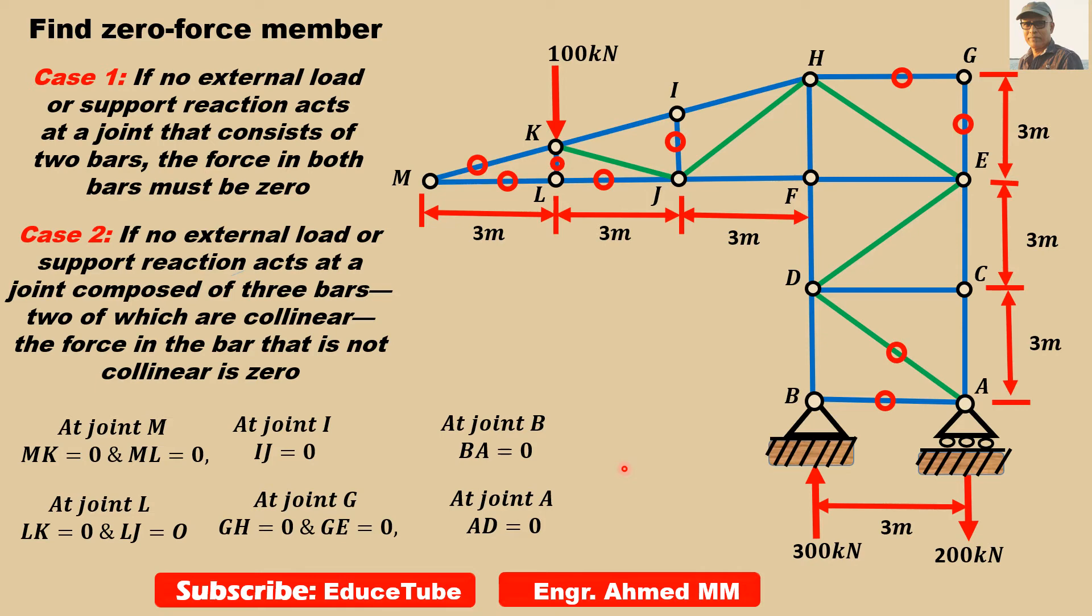Now let's move to joint C. C will follow Case 2. AC and CE are collinear and this third one is not collinear, Case 2. So CD will be zero.